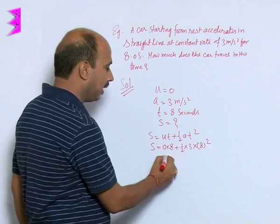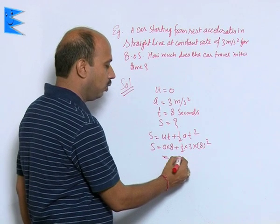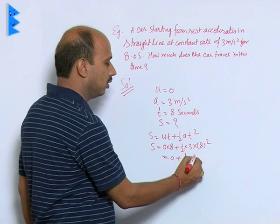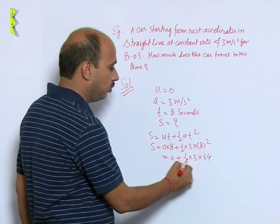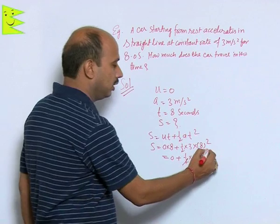So, now we can write is 0, that is 0 plus half into 3 into 64 and this you can take here 32.